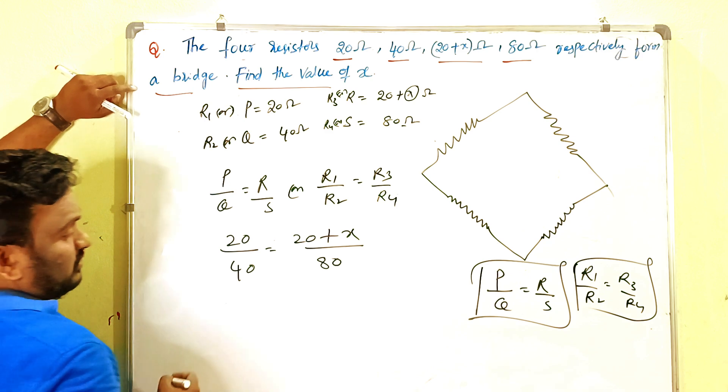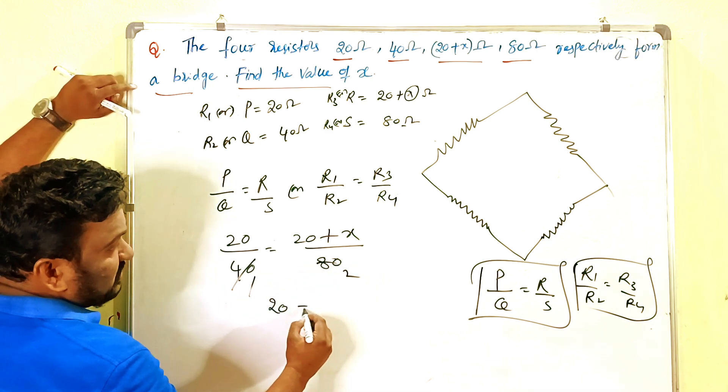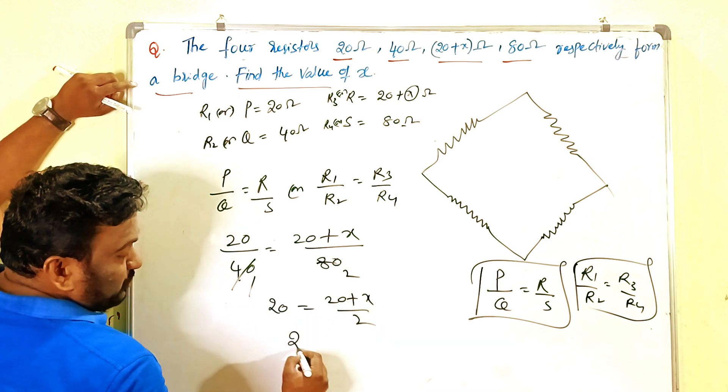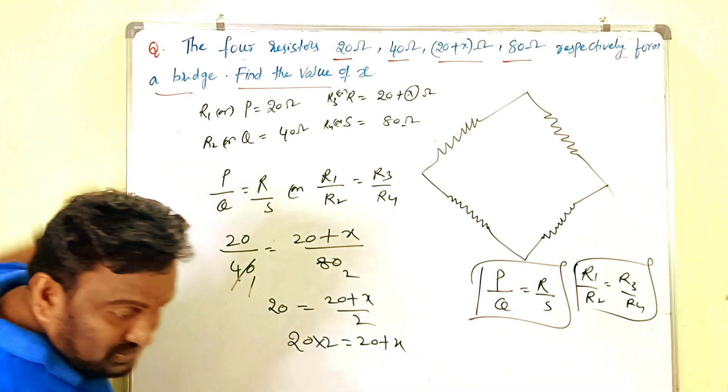Simple. Here 40 divided by 2 is equals 20. Then what we get? 20 is equals to 20 plus X by 2. Cross multiplication: 20 into 2 equals 20 plus X. So 40 equals 20 plus X.